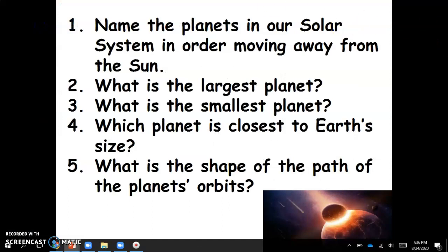Right now I just want to review the planets in our solar system because this should be a review from middle school but you know sometimes we forget things so it's good to kind of go over this information again. So before we move on to Kepler's laws we just need to be able to name the planets in our solar system. We need to be able to identify the largest planet, the smallest planet, the planet that's the closest to the earth size, and then also to identify the shape of the path of the planet's orbit.